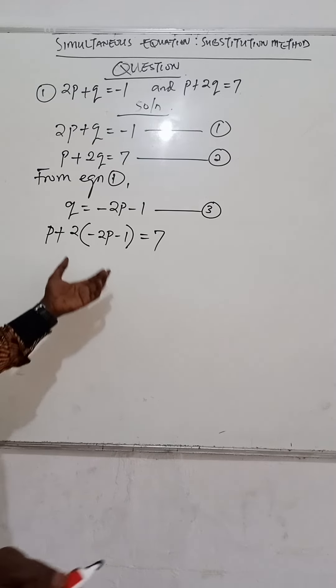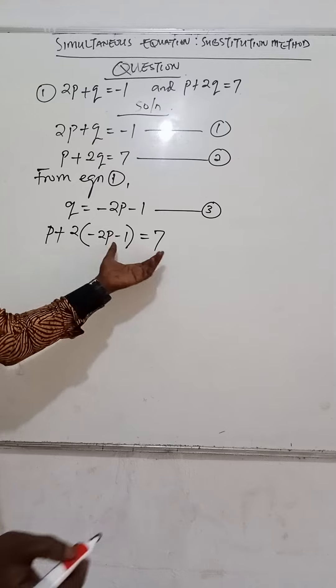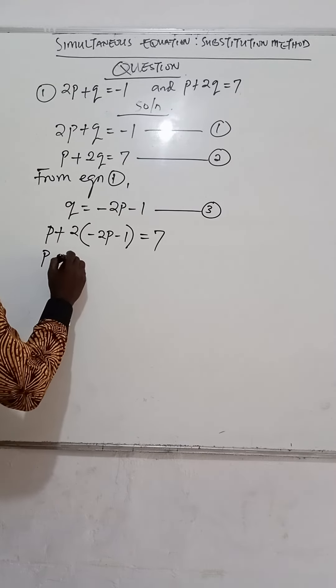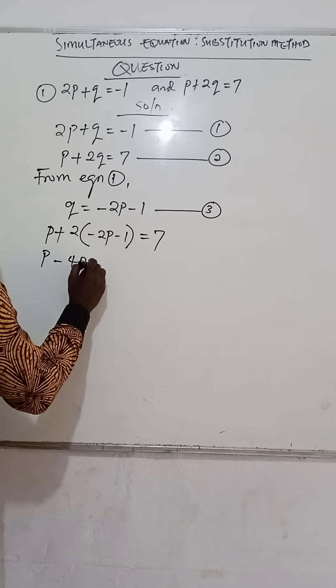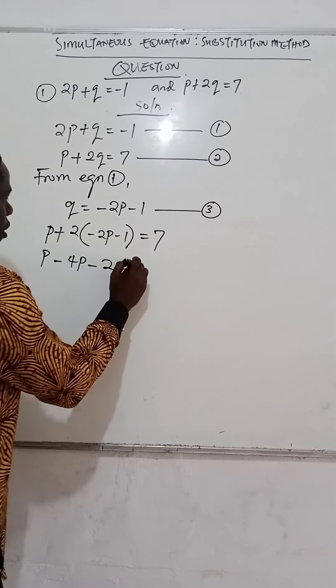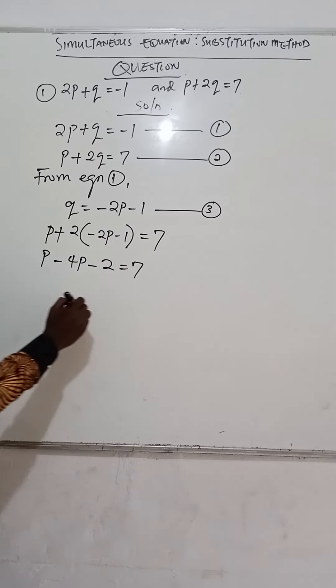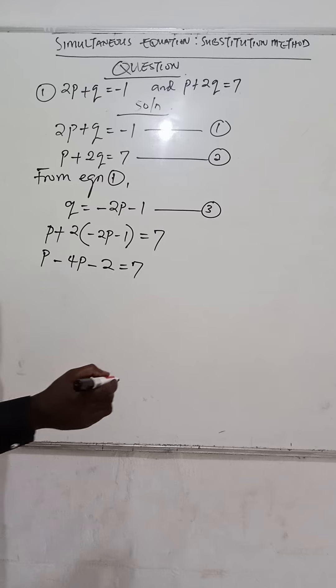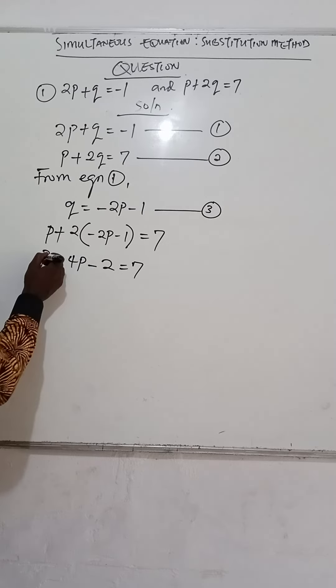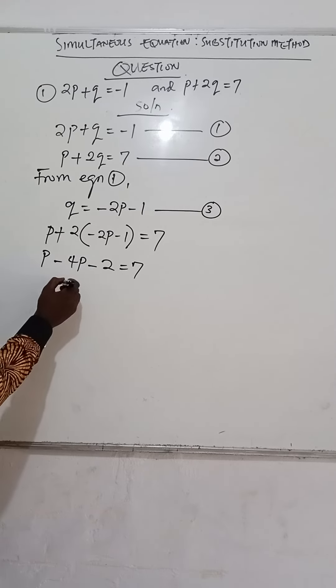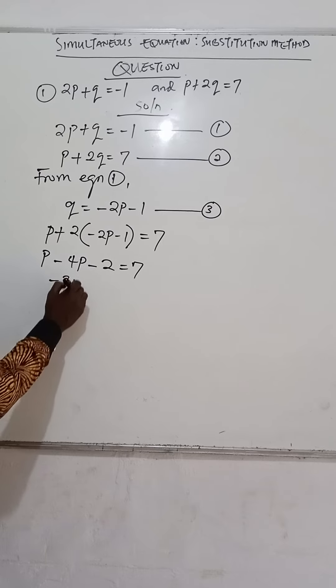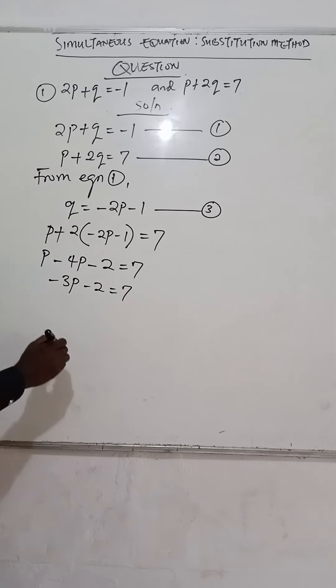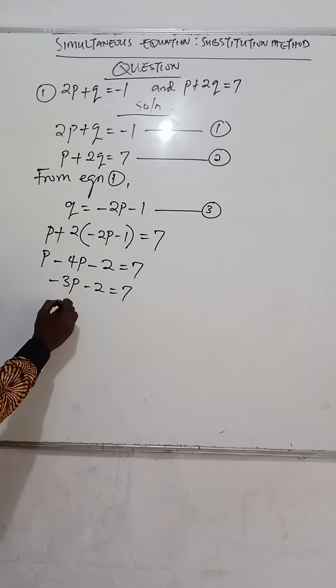Now we expand the brackets. We have p - 4p - 2 = 7. So p minus 4p, they are like terms, so we can add. We collect like terms and transfer.